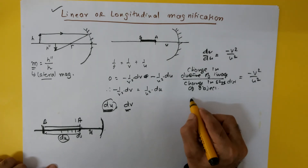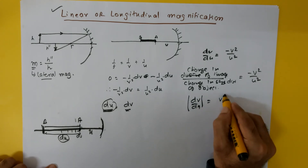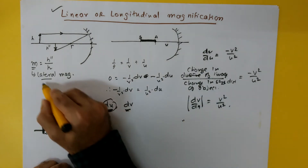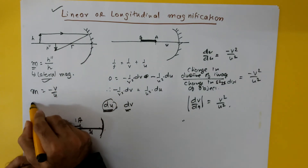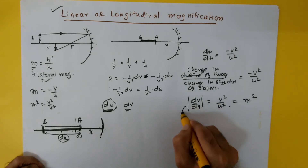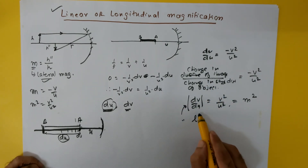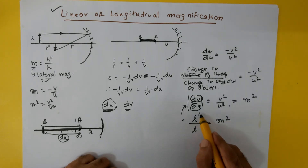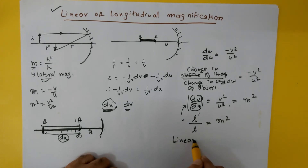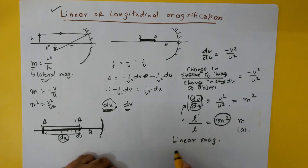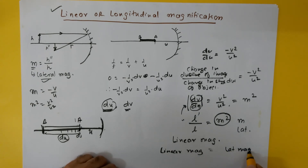Now, we know that lateral magnification m is given by −v/u. Therefore m² = v²/u². So dv/du can be written as m². If we call dv the length of the image l' and du the length of the object l, then l'/l = m². This ratio l'/l is known as the linear magnification or longitudinal magnification, and it equals m², where m is the lateral magnification. In other words, linear magnification equals lateral magnification raised to the power 2.